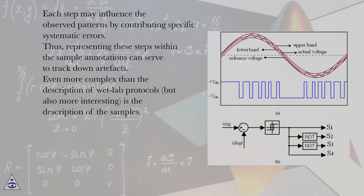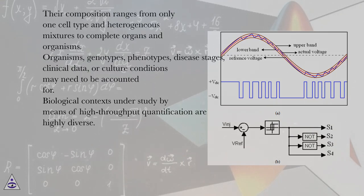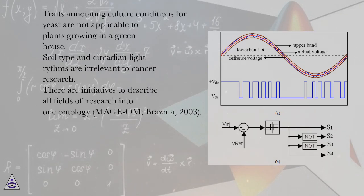Thus, representing these steps within the sample annotations can serve to track down artifacts. Even more complex than the description of wet lab protocols, but also more interesting, is the description of the samples. Their composition ranges from only one cell type in heterogeneous mixtures to complete organs and organisms. Organisms, genotypes, phenotypes, disease stages, clinical data, or culture conditions may need to be accounted for. Biological contexts under study by means of high-throughput quantification are highly diverse. Traits annotating culture conditions for yeast are not applicable to plants growing in a greenhouse. Soil type and circadian light rhythms are relevant to cancer research.